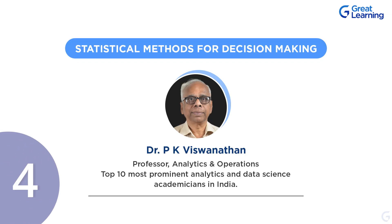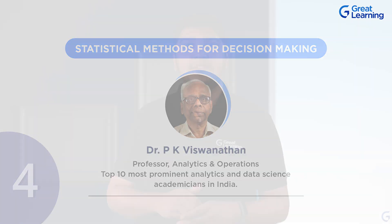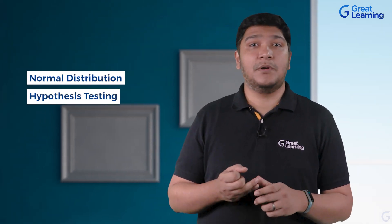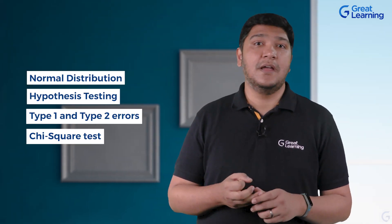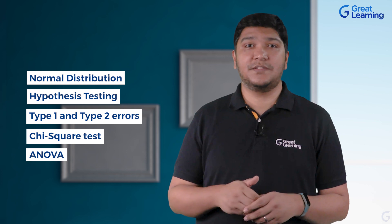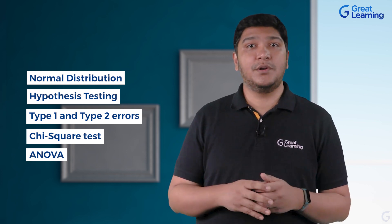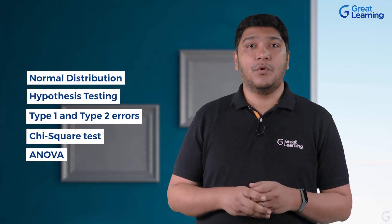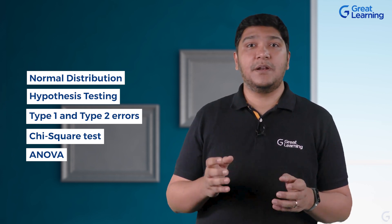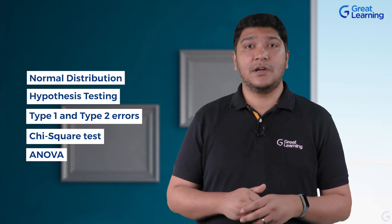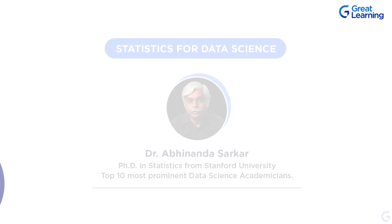Number four: Statistical Methods for Decision Making. This course is very important as you'll be learning sampling, normal distributions, hypothesis testing, and its various forms. It's a very important course if you want to gain a deeper understanding of the concepts through the use of illustrated solved examples.